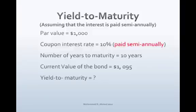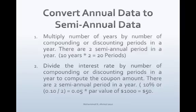You have invested in a $1,000 par value bond that pays 10% interest annually. The bond will mature in 10 years and the current value of the bond is $1,095. What is the yield to maturity for the bond?